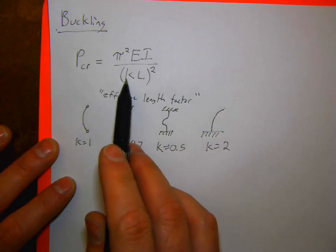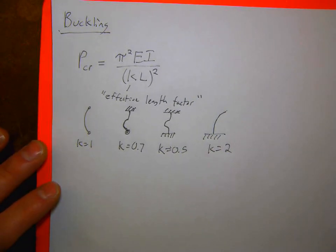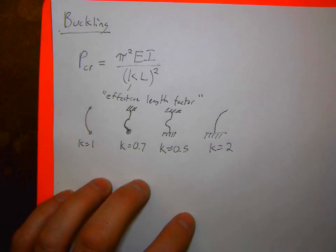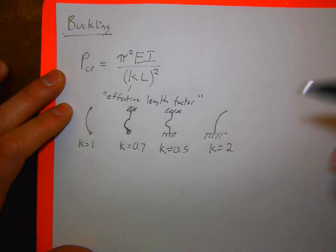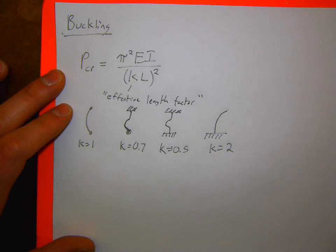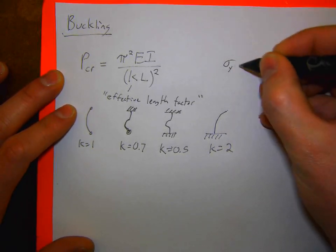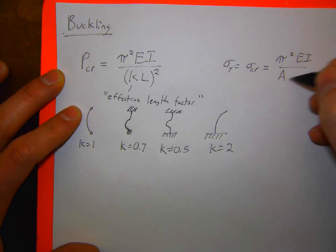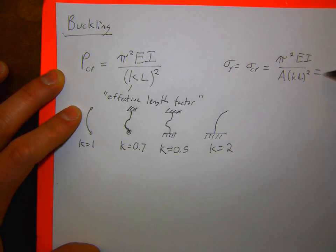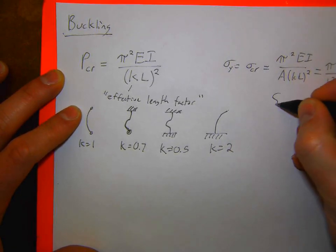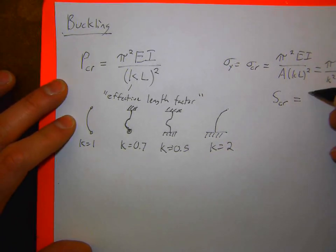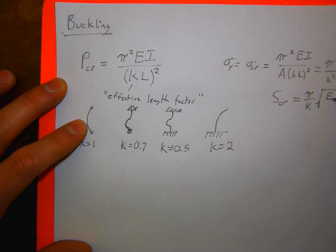Know that equation and when to use these K values. The same moment of inertia I applies — probably only cylinders or rectangles will appear. The other equation to know is the critical slenderness at which a column will preferentially buckle versus yield: setting yield strength equal to π²EI/(AKL²), we get the critical slenderness S_cr = (π/K)√(E/σ_Y).